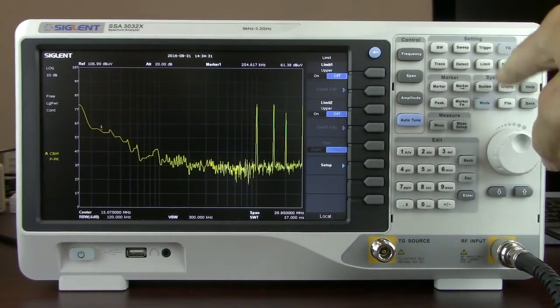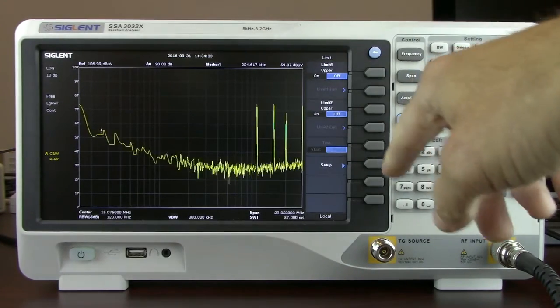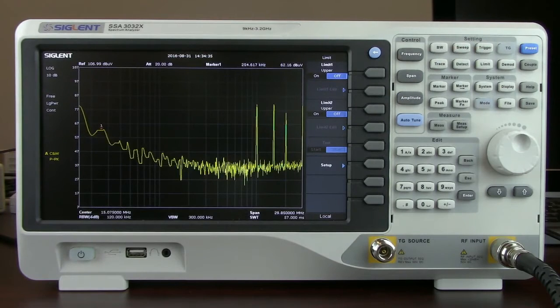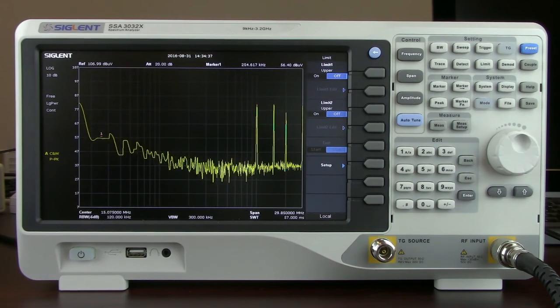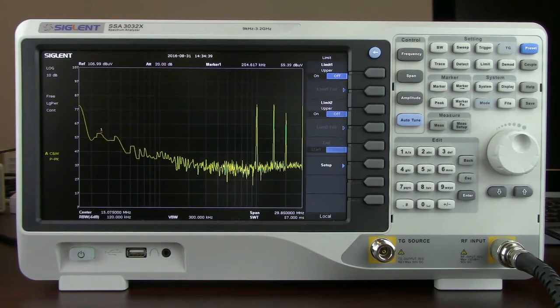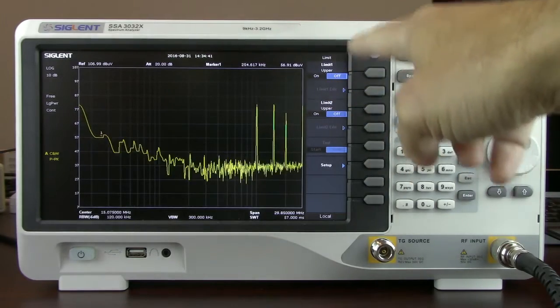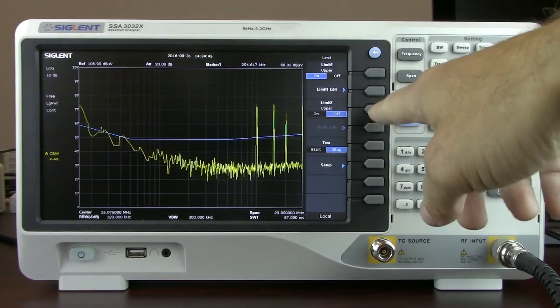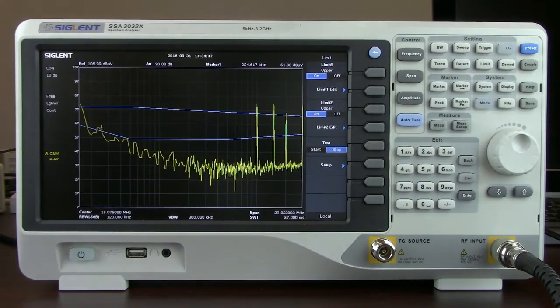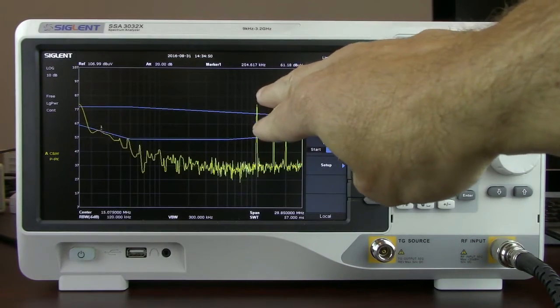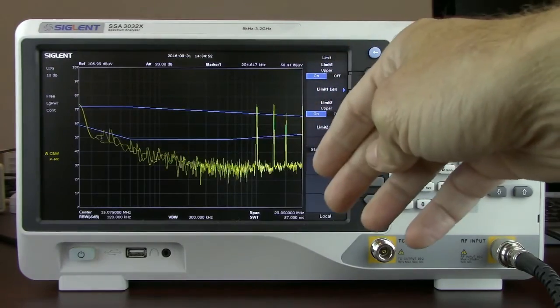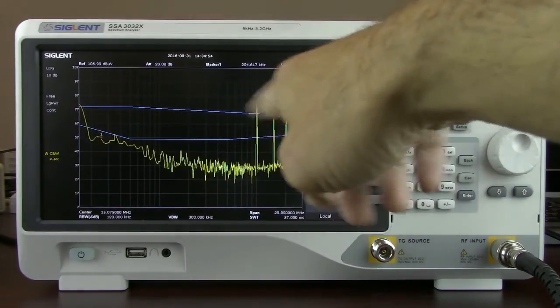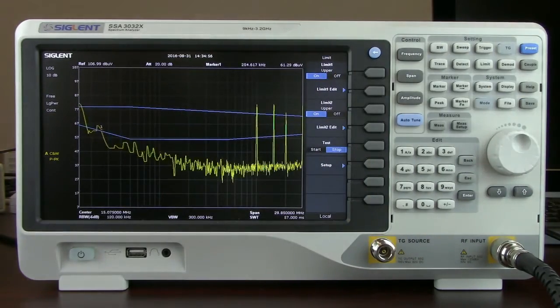Pressing the limit key we've got two limit lines. Many spectrum analyzers will not have two full limit lines. They'll have an upper and a lower. In this case we've got two limit lines that we can select to be upper or lower. We're going to turn on limit line 1 and turn on limit line 2. Now we can visualize the two limit lines we need to meet for this particular application, and our electromagnetic performance of our device under test shown under the yellow trace here.